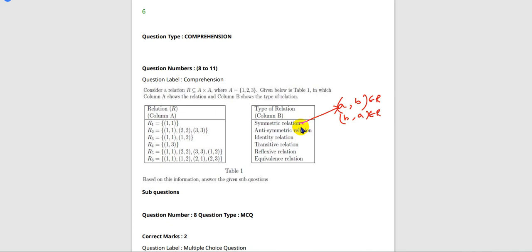Anti-symmetric relation: if (A, B) belongs to R and A is not equal to B, then (B, A) should not belong to R.